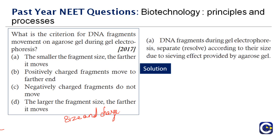The correct answer is option A: the smaller the fragment size, the farther it moves. When the molecular weight is less, it can move very fast; if it is heavy, it will not move as far. DNA fragments during gel electrophoresis separate according to size due to the sieving effect provided by the agarose gel.